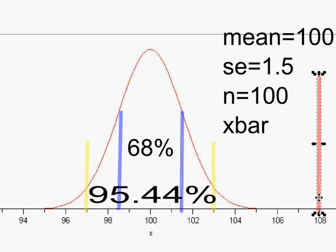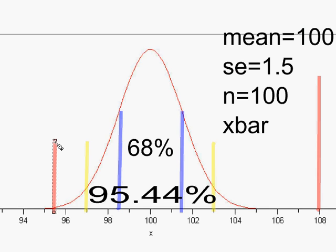Or maybe it's more likely that this isn't the real distribution our sample means are coming from — because the real mean isn't 100. Perhaps the real mean is closer to 104, 106, 108, or even 110. At some point you have to seriously doubt that 100 is true. Is it when the sample mean is more than one standard deviation away, or after it's more than two standard deviations away?